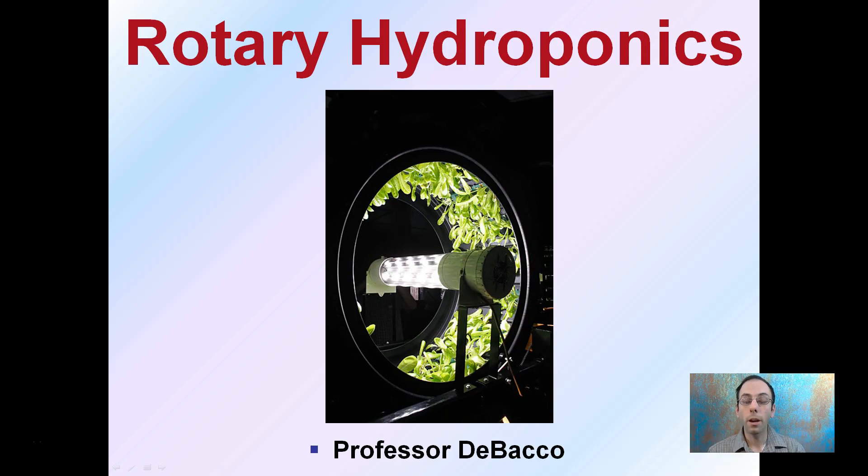Now we're going to look at rotary hydroponics, which as the name implies, uses a wheel that rotates around a central light source. There's nutrient solution in the bottom and this rotates through very slowly, allowing the plants to get full exposure without needing a reflector on the light. It's giving 360 degrees of light for the operation.